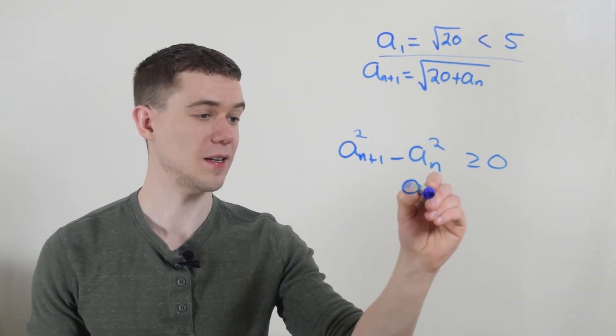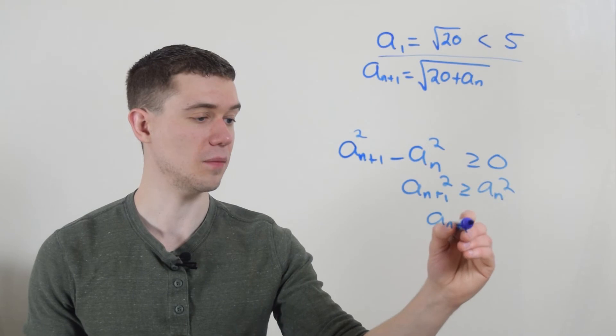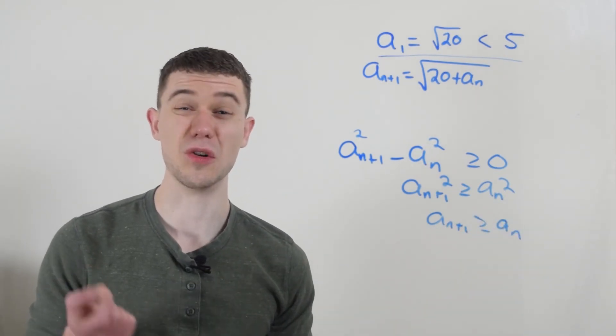this would mean that a_{n+1} squared is greater than or equal to a_n squared, or that a_{n+1} is greater than a_n. And this shows that this function is always increasing. It's monotonic.